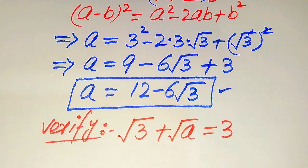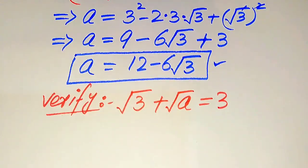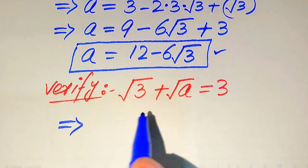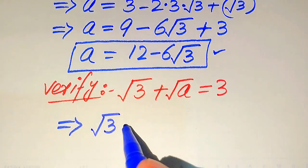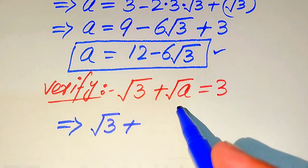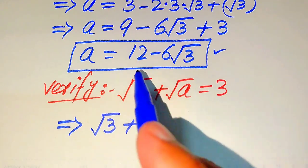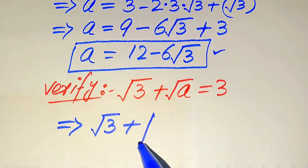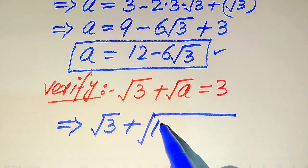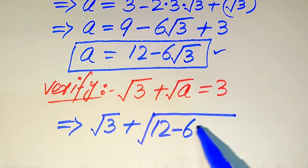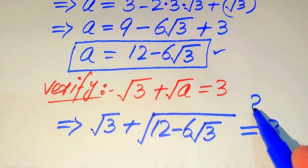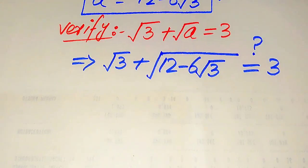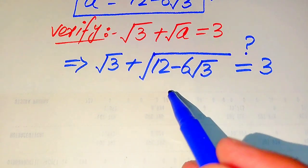The given question statement is: square root of 3 plus square root of a equals 3. Now we substitute the value of a into the left hand side. When we put this value in, it becomes: square root of 3 plus square root of (12 minus 6 times square root of 3) equals 3. This is our claim.